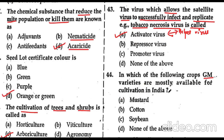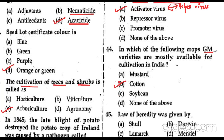In India, GM varieties are mostly available for cultivation in cotton. Question 45: the law of heredity was given by the scientist Mendel.